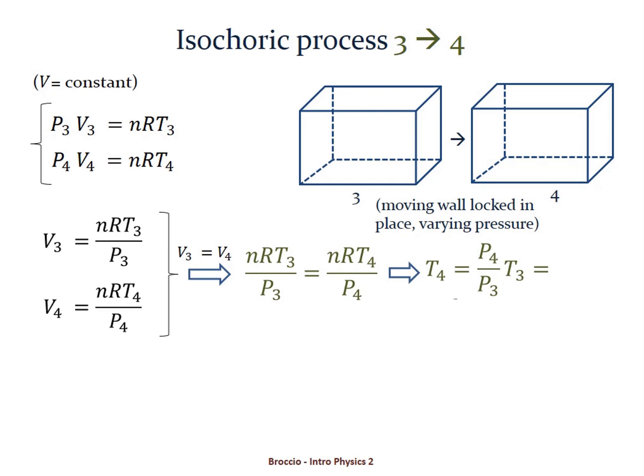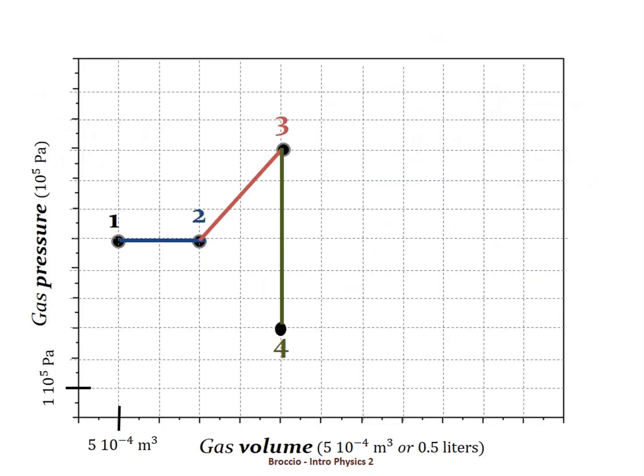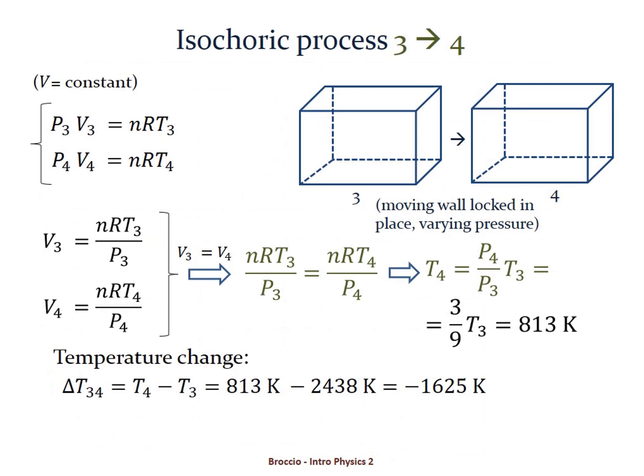temperature T4. So temperature T4 is P4 over P3 times T3. Going back to the graph P3 is 9×10⁵ pascal and P4 is 3×10⁵ pascal so gives us 3 ninths times T3 that is 813 kelvin. The last temperature change is in fact negative that is minus 1625 kelvin.